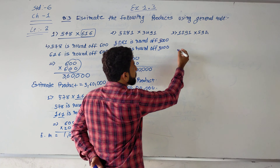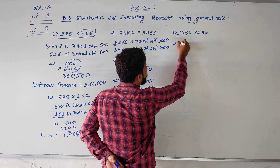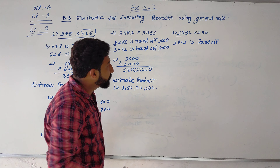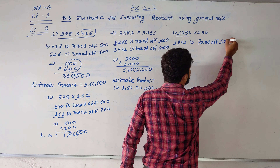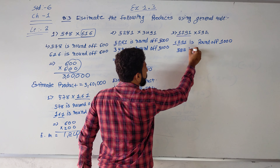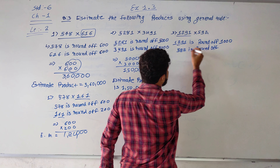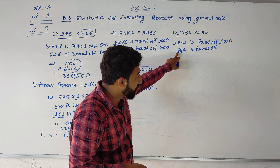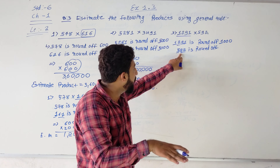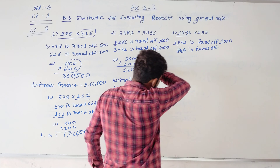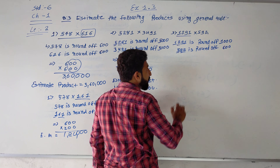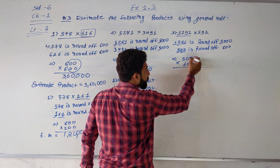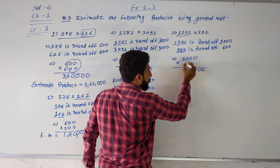Next: 1291 is round of which value — because of digit 2 we can round to 1000. Then 592 is round of — 9 is greater than 5 so we can add the next round of value — it becomes 600. Count the zeros: 1, 2, 3, 4, 5, 6 — ones are 6, giving the estimate product.